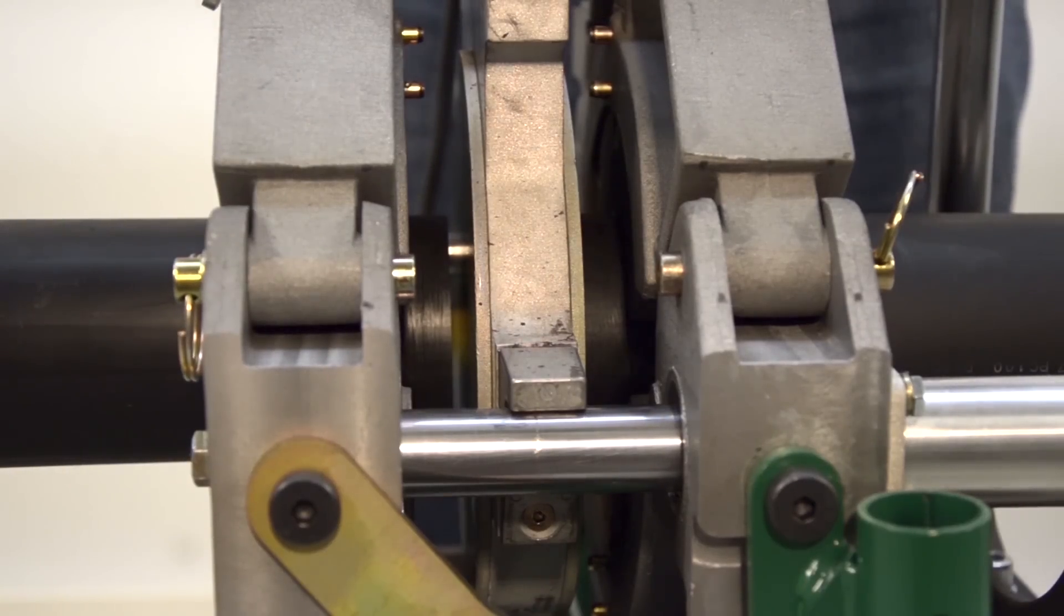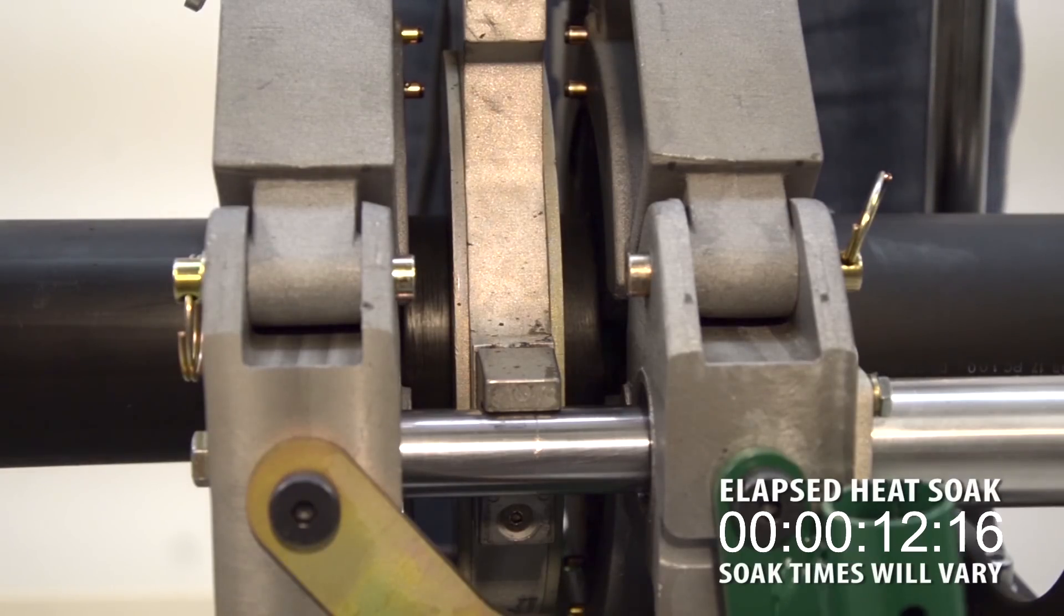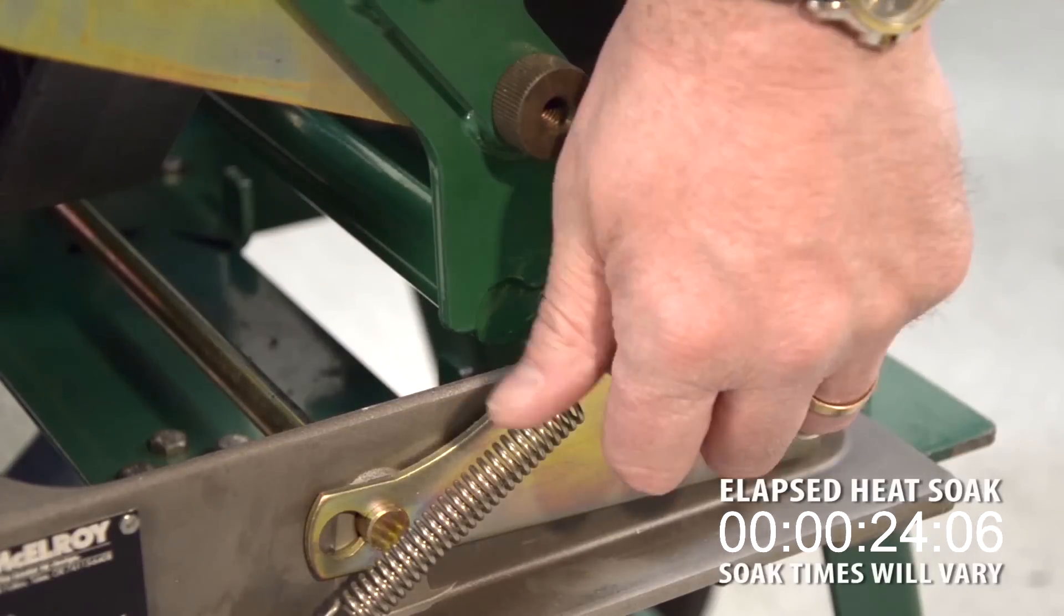To begin the heat soak, bring the pipe ends against the heater and ensure the entire circumference of the pipe is in contact. Now apply just enough force to keep the pipe against the heater. At this point, the locking cam can be engaged.